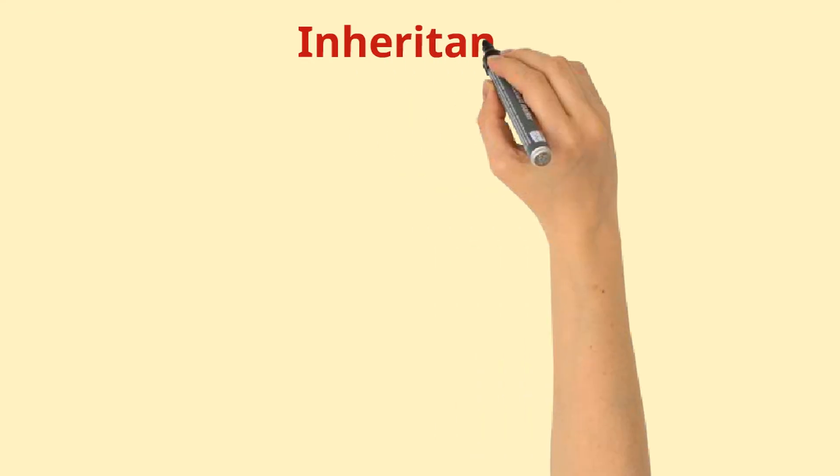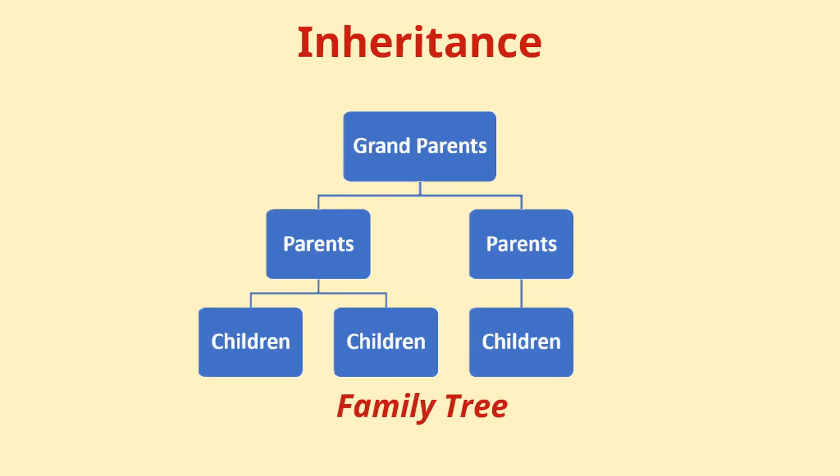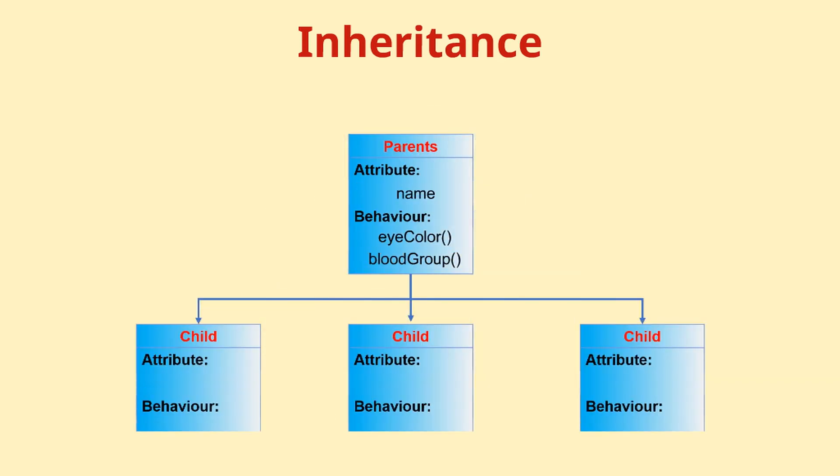The next OOP concept is inheritance. In real world, we inherit the features of our parents and grandparents and have a family tree or hierarchy. Similarly, object-oriented languages allow new classes to be formed by inheriting features of a parent or of a base class.